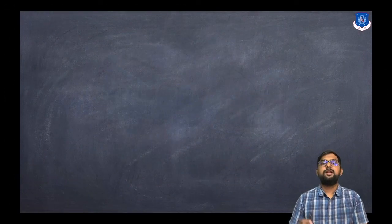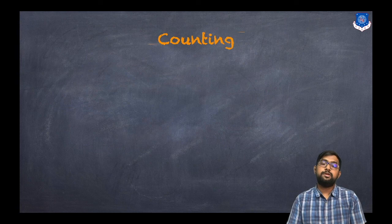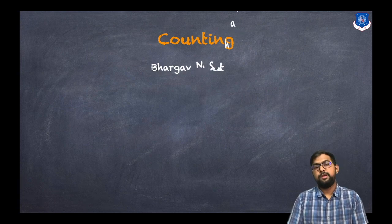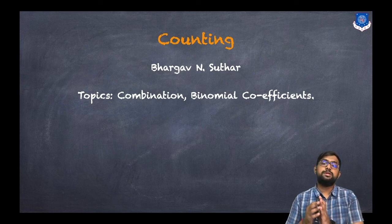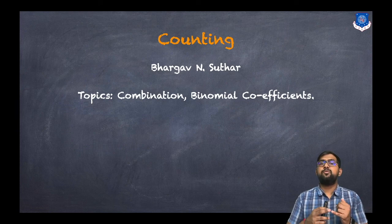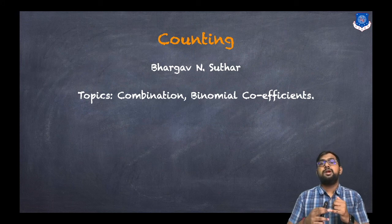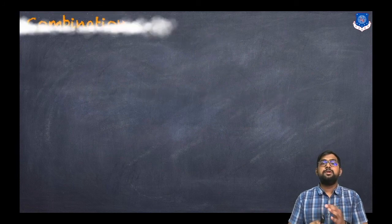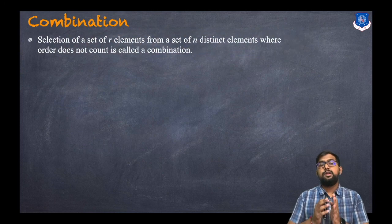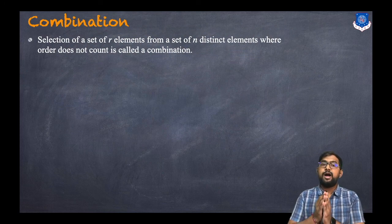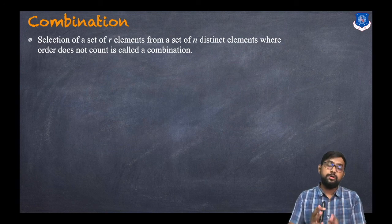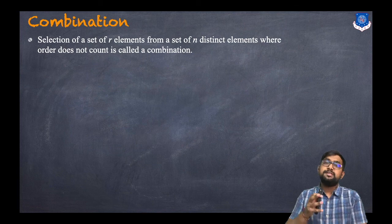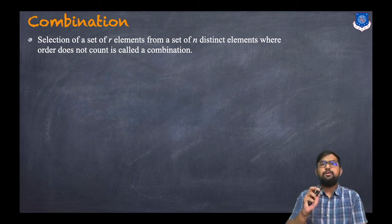Hey everyone, this is Bhargav Sothar and today we are continuing with the topic of combinations. In this session we will discuss what is a combination and what is a binomial coefficient. Previously we discussed permutation and the pigeonhole principle. A combination is a selection of r elements from a set of n distinct elements where order does not count. Permutation is an arrangement; combination is a selection where order does not count.